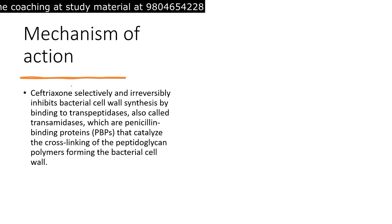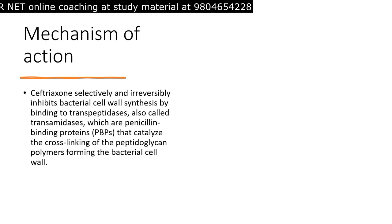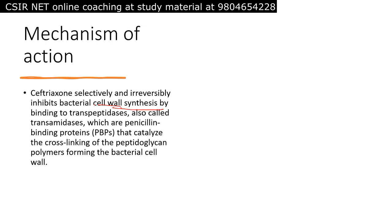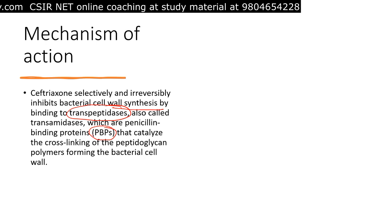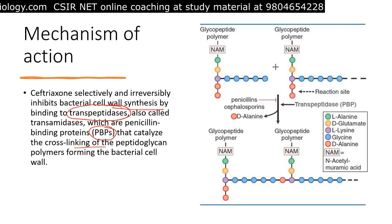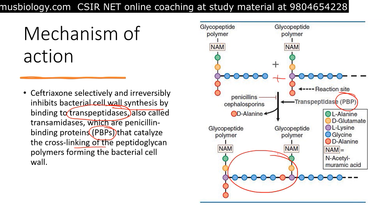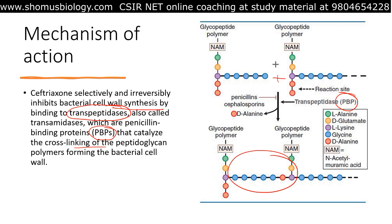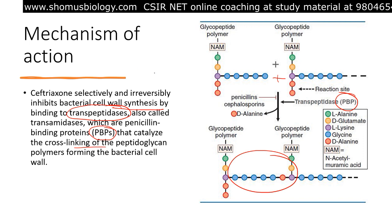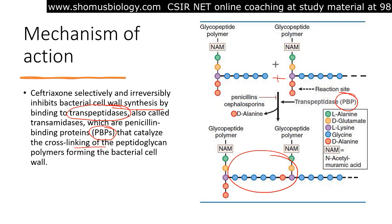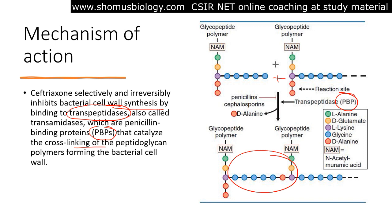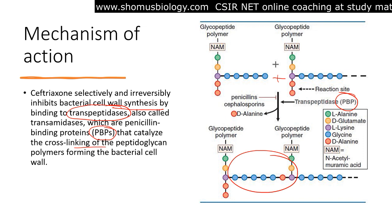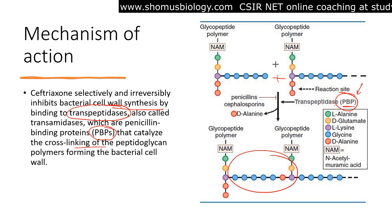The mechanism of action of ceftriaxone, like all beta-lactam antibiotics, targets bacterial cell wall synthesis — making it bactericidal. It inhibits bacterial cell wall synthesis by binding to the transpeptidase enzyme, also known as penicillin-binding protein (PBP). PBP normally catalyzes the cross-linking of peptidoglycan layers, forming peptidoglycan polymers of NAM structures together.